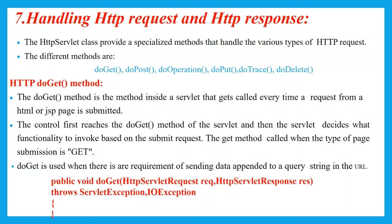The DoGet method is used inside the servlet and gets called every time a request from either an HTML or JSP page is submitted. The control first reaches the DoGet method of the servlet. Then the servlet decides what functionality to invoke based on the request submitted by the client. The Get method is called when the type of form submission is Get.